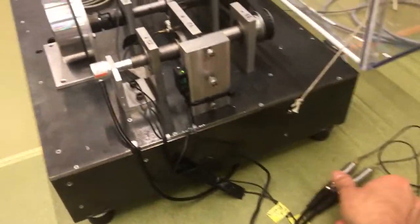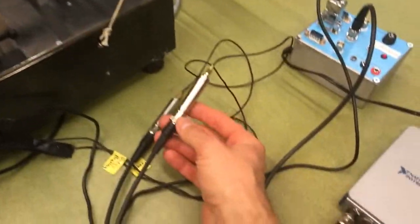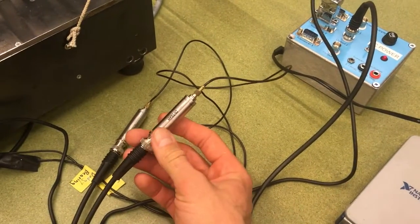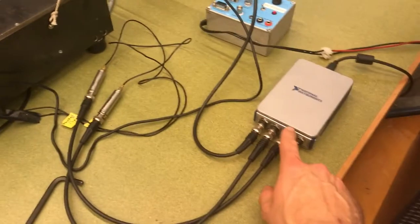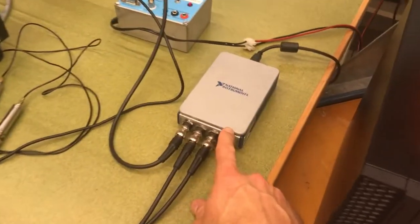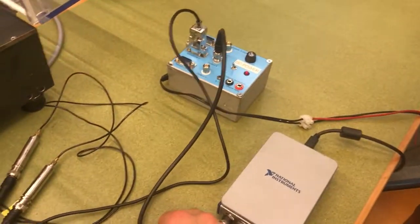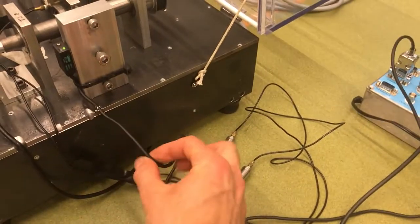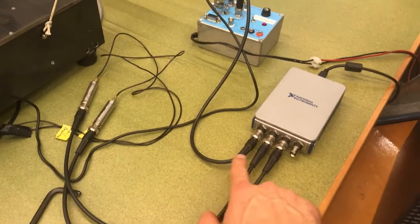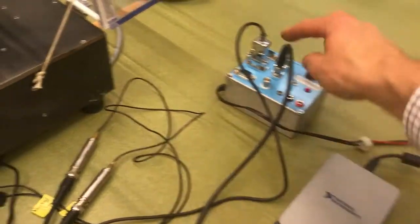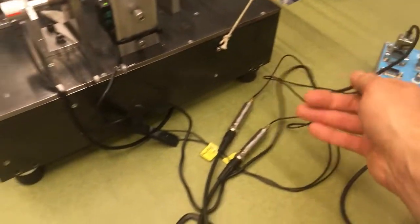The instruments are powered, accelerometers are powered by these inline charge amplifiers here which are provided with constant current from the data acquisition system here, National Instruments Data Acquisition System. The tachometer is powered using this DC power supply over here, so tachometer signal comes again into the acquisition system on that channel and this cable goes to the tachometer.